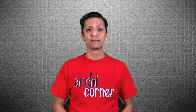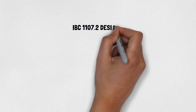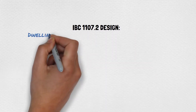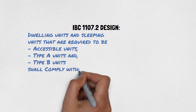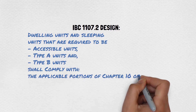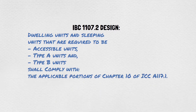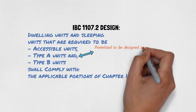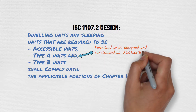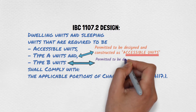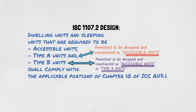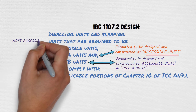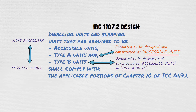Let's start with scoping. IBC 1107.2 states that dwelling units and sleeping units that are required to be accessible units, Type A units, and Type B units shall comply with the applicable portions of Chapter 10 of ICC A117.1. Type A units are permitted to be designed and constructed as accessible units. Type B units are permitted to be designed and constructed as accessible units or as Type A units. From most accessible to least accessible, you have accessible units, Type A units, and Type B units.